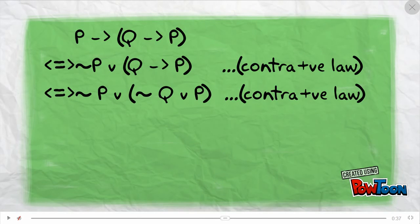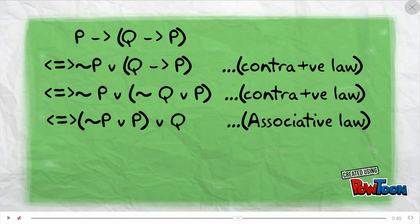Lastly, by dominant law, we get the truth value false, which makes the statement contradiction.